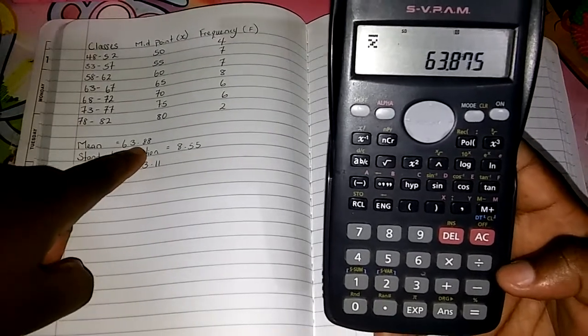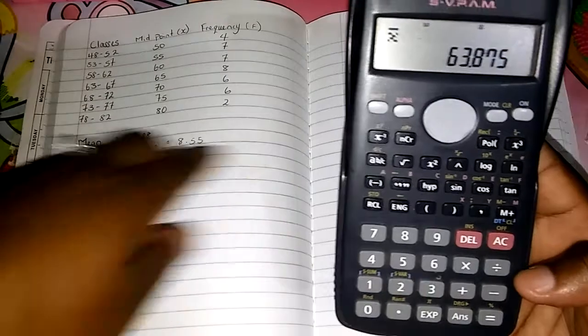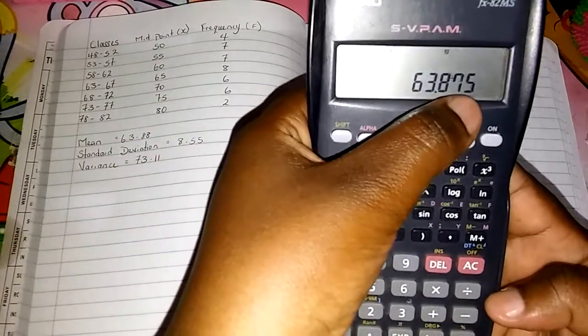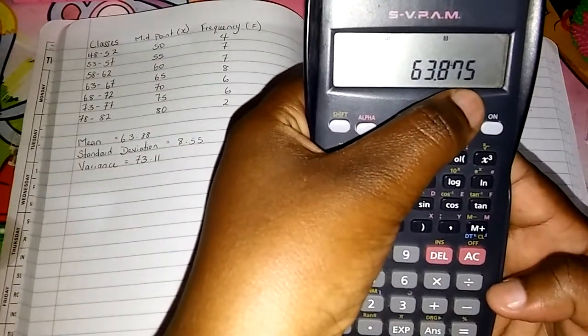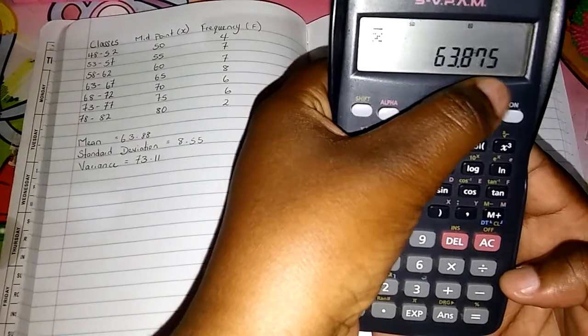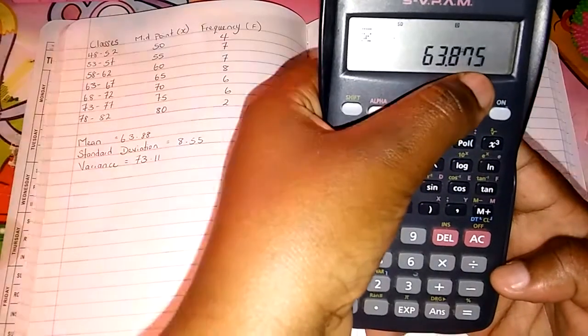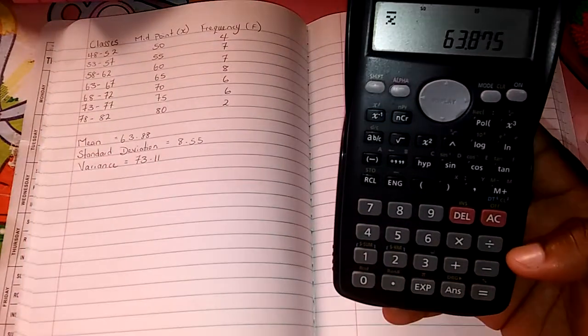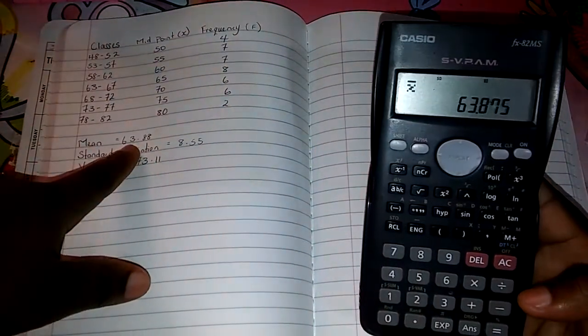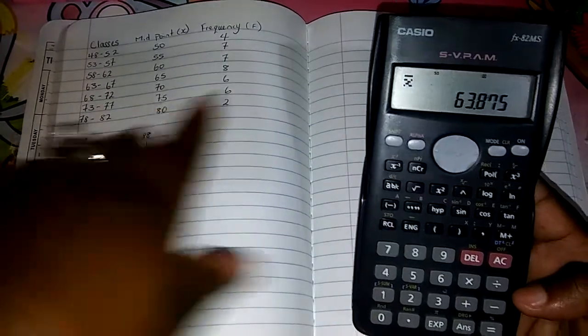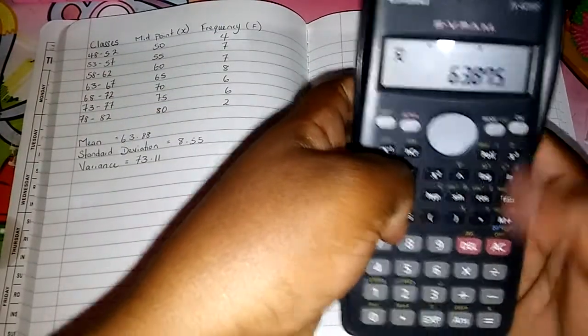And here it is, 63.88. Why it's 88? We round off the 7. And we know that we should put 1 on it if it's 5 or more, and it's 5 or more, so we add 1 to the 7, and that is 8. So we have 63.88. That's how we get that. We proved the mean.